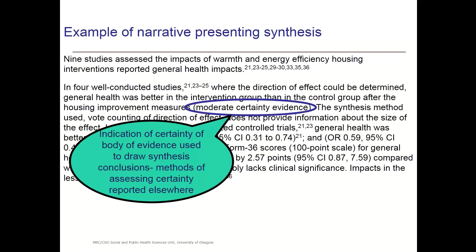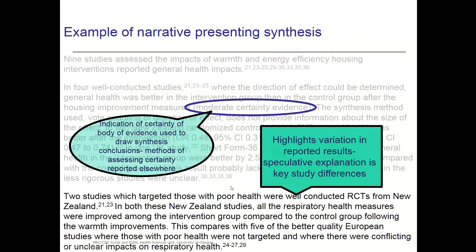Then indicate the certainty, which has already been talked about — that's quite straightforward. And if you choose to look in more detail, even in an exploratory way, at variations in effects across the studies, you can report this narratively. For example, in this example, two studies targeted people with poor health and found something different compared to studies from outside New Zealand where studies were not targeting people with poor health. The findings in these two groups of studies were different, and in that review that was used to explain some of the heterogeneity in the reported effects.